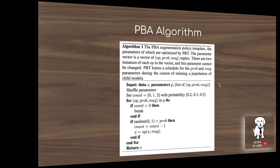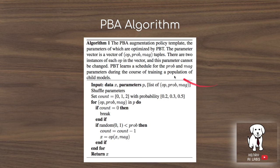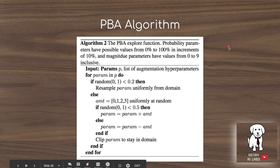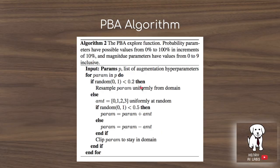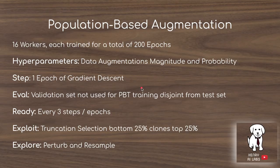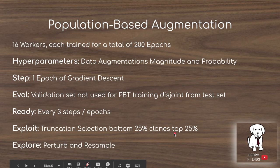In the PBA algorithm, prior distributions cover the magnitude, probability, and operation parameters. The explore algorithm uses a combination of perturbing and resampling: if a value is less than 0.2, they will more frequently perturb it rather than resample it. Each step is one epoch of gradient descent, evaluated after every three epochs. The validation set is kept disjoint from the test set. Truncation selection has the bottom 25% clone uniformly from the top 25%, followed by the perturbation-and-resampling explore step.